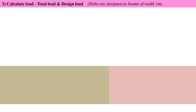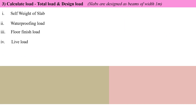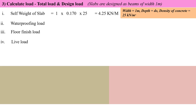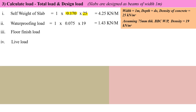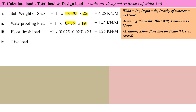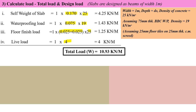Now calculate the loads. Self-weight of slab = 1 × 0.170 × 25 = 4.25 kN/m. Waterproofing load (75 mm brick bat coba) = 0.075 × density of brick. Floor finish load = 25 mm floor tile + 25 mm concrete mortar screed, both multiplied by density of concrete. Live load = 4 kN/m². Total load = 10.93 kN/m. The length-to-width ratio r is noted for further use.